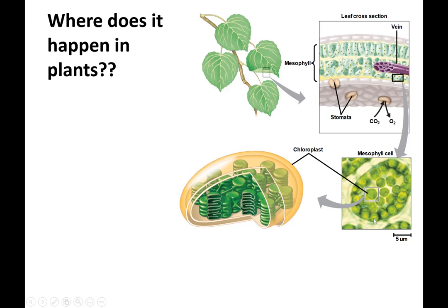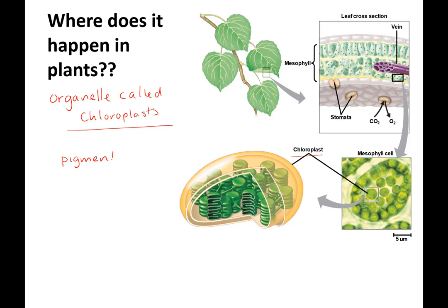Where does photosynthesis happen? It happens in an organelle called the chloroplast. Chloroplasts have a pigment that captures light called chlorophyll — keep those two words separate. And plants have these cool little guys called stomata.